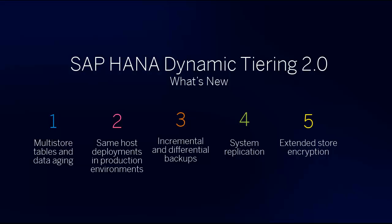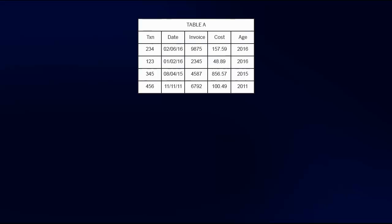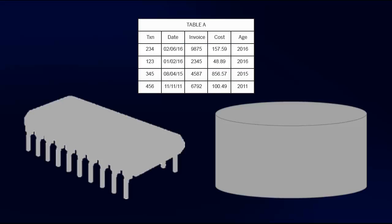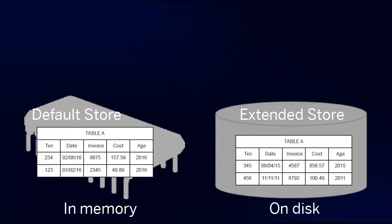The first new feature is multi-store tables and the ability to age data from hot to cold storage. A multi-store table is a single table whose data is organized into partitions. These partitions reside in both the default store, which is in memory, and the extended store, which is on disk. Queries on a multi-store table consider all partitions, regardless of store.